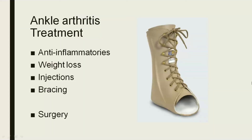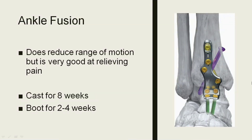Try anti-inflammatories. Try weight loss. Injections can sometimes help — steroid injections — though I find they don't usually help as much as they would for knee arthritis or shoulder pain. Bracing is the mainstay of treatment. I'll often do a custom brace that's very rigid and takes some of that stress off the ankle as you're walking. If none of this works, surgery is an option. You can do a fusion — take out whatever cartilage is left and put a plate and screws in to let the bones heal into one bone so you no longer have a joint there. It does reduce your motion, but people typically do well and are usually happy because it gets rid of the pain. I keep you in a cast for about eight weeks and a boot for a couple of weeks after that.